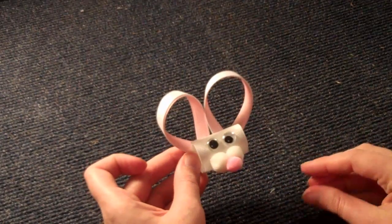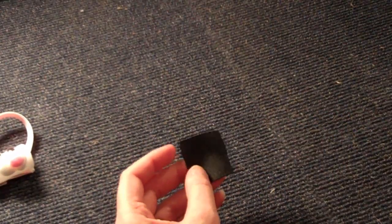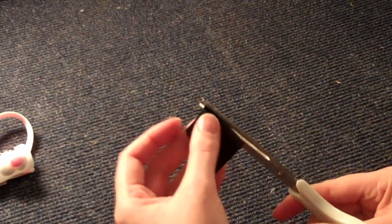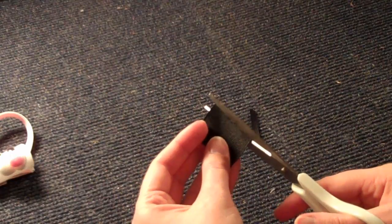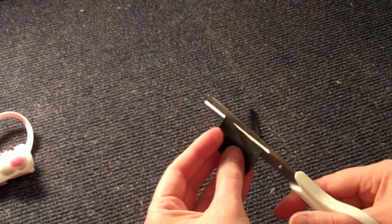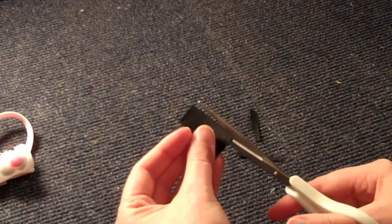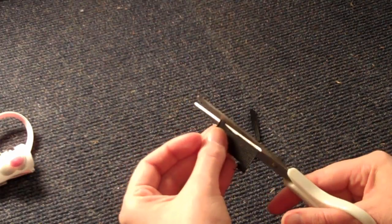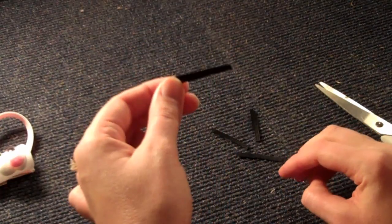Now we're going to add the whiskers. To do the whiskers, you're going to need to take your black piece of ribbon. And all you do is clip, just clip some whiskers. We're going to be needing four or two on each side.